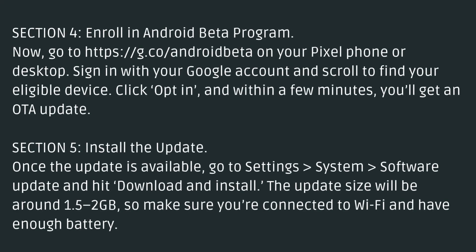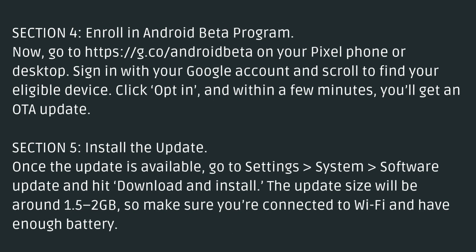Section 4: Enroll in Android Beta Program. Now go to the beta enrollment page on your Pixel phone or desktop, sign in with your Google account, and scroll to find your eligible device. Click Opt-in, and within a few minutes you'll get an OTA update.